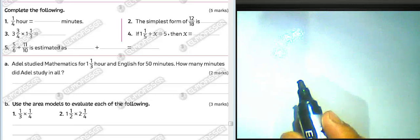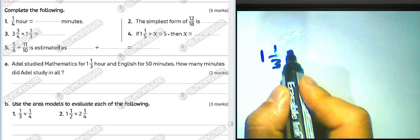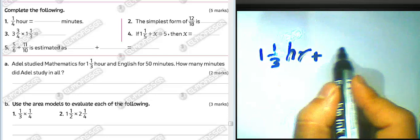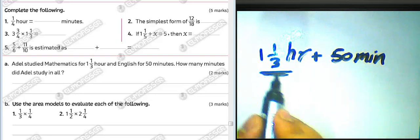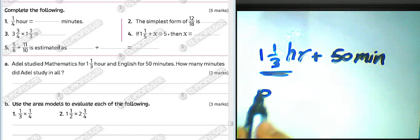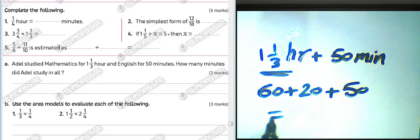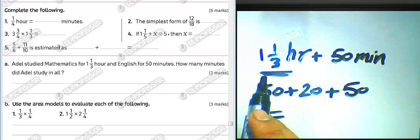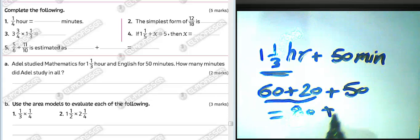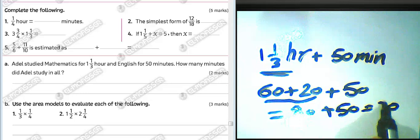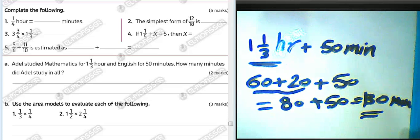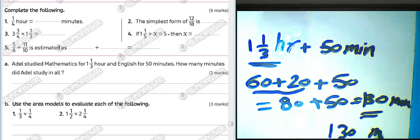Another question: I studied mathematics for one and one third hours and English for fifty minutes. How many total minutes did I study? One hour equals sixty minutes, one third hour equals twenty minutes, so one and one third hours equals eighty minutes. Eighty plus fifty equals one hundred thirty minutes.